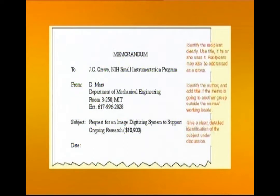The 'From' section will give clear identification of the author so it is clear who the memo is going out from. If they have a designation — manager, assistant manager, etc. — that will be written. The third element is the subject, which will give a clear, detailed identification of the subject under discussion. Then there is the date, so it is clear when this memo was sent out and it can be on record.